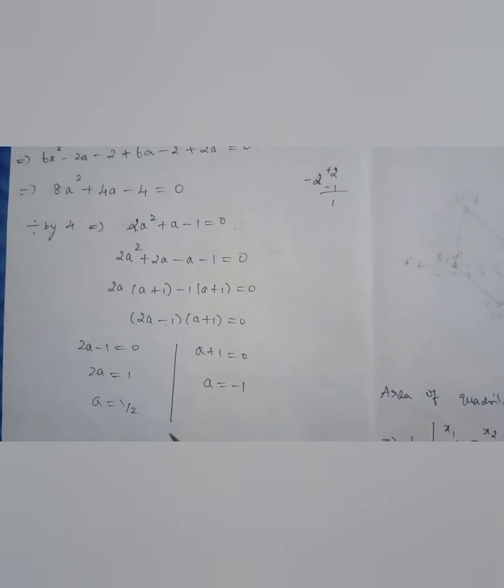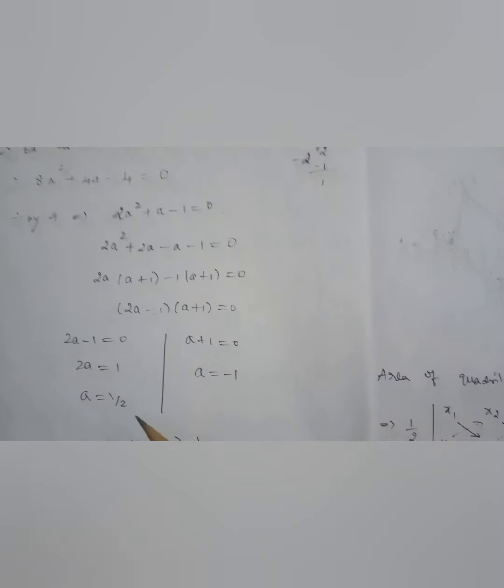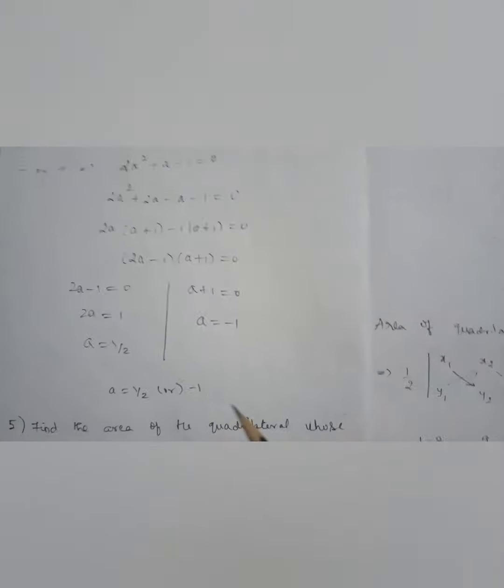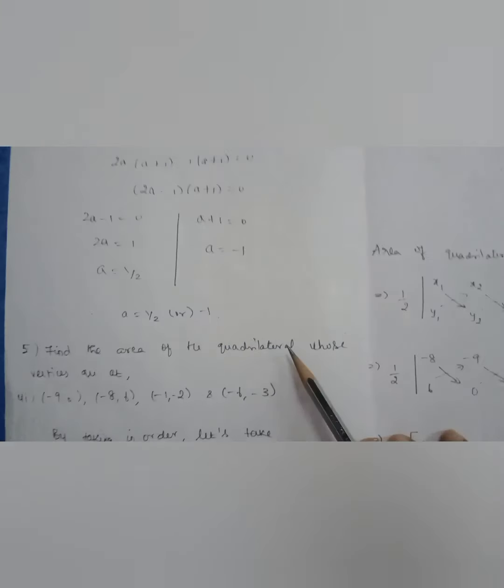Factorizing 2a² + a − 1 = 0 gives a = 1/2 or a = −1. This is a very important sum.